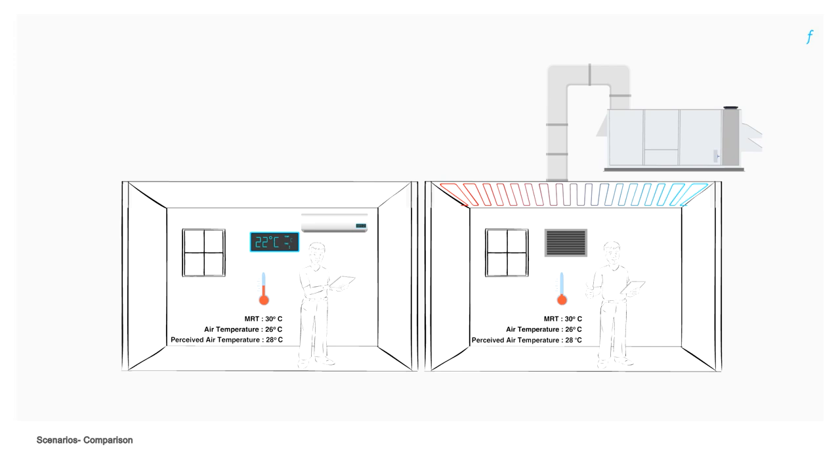In radiant cooling systems which have a dedicated outdoor air system as well, the air requirement is considerably lesser than a regular air conditioner, which is also reflected in the reduced power consumption of the overall system.